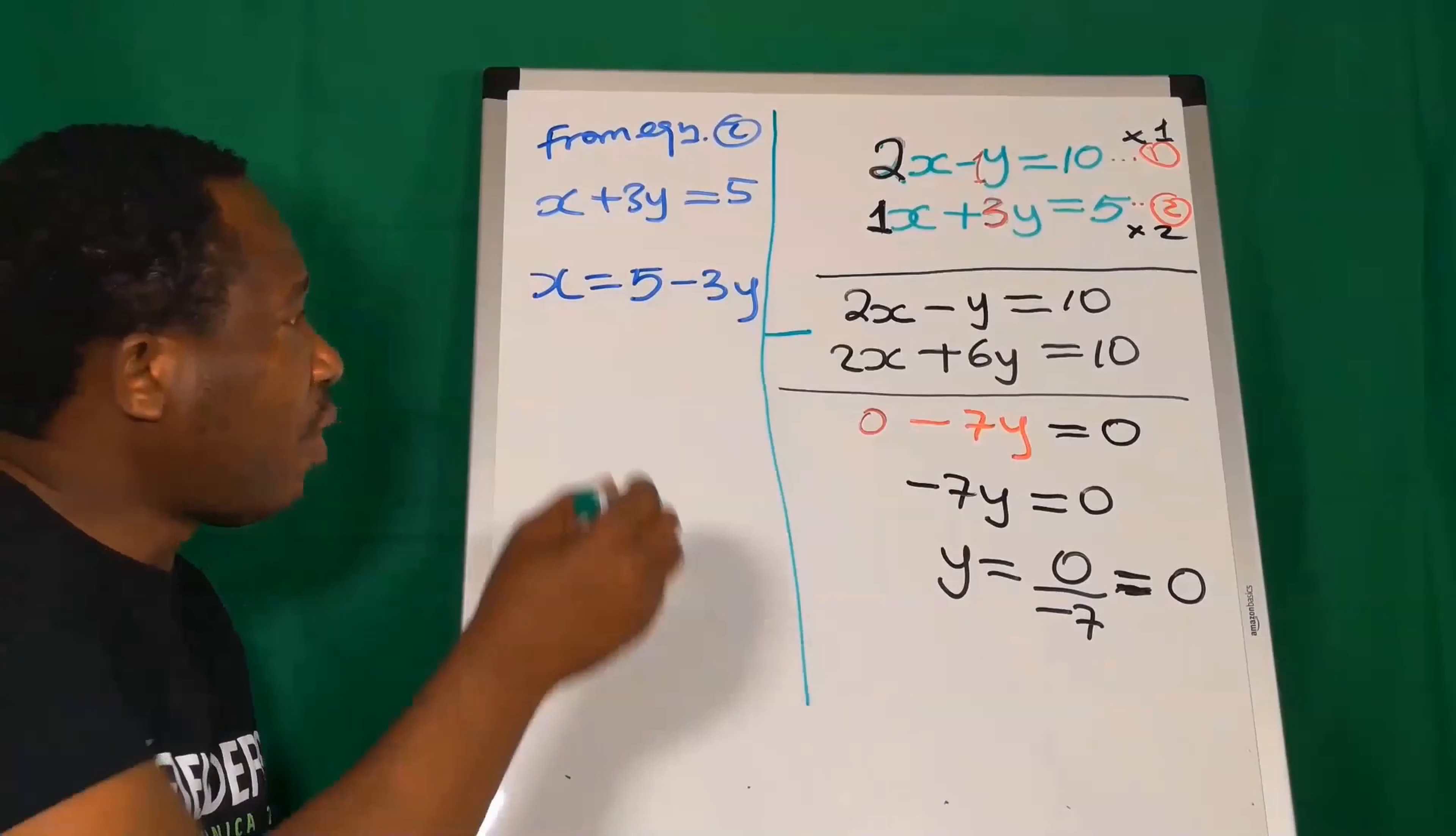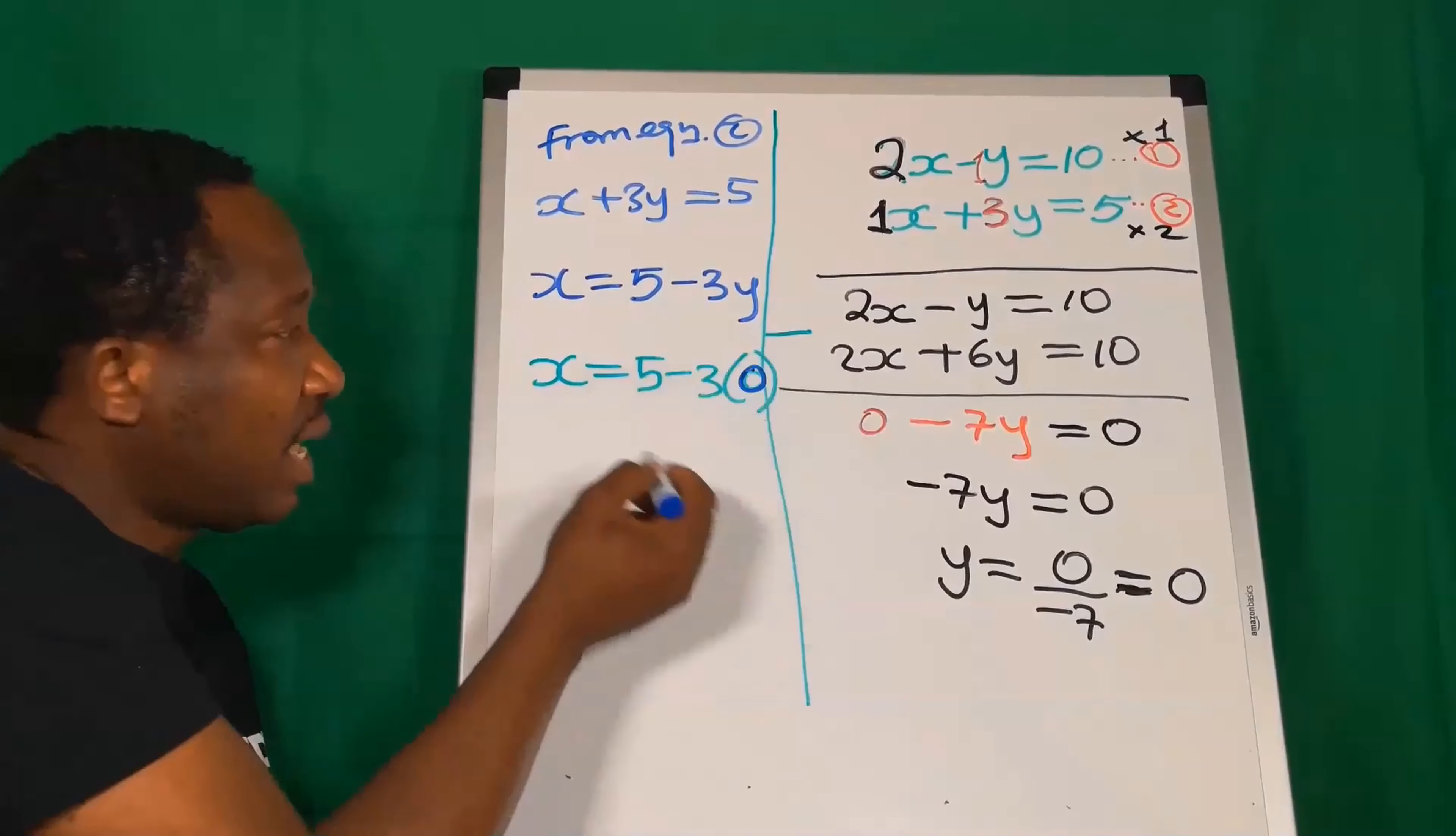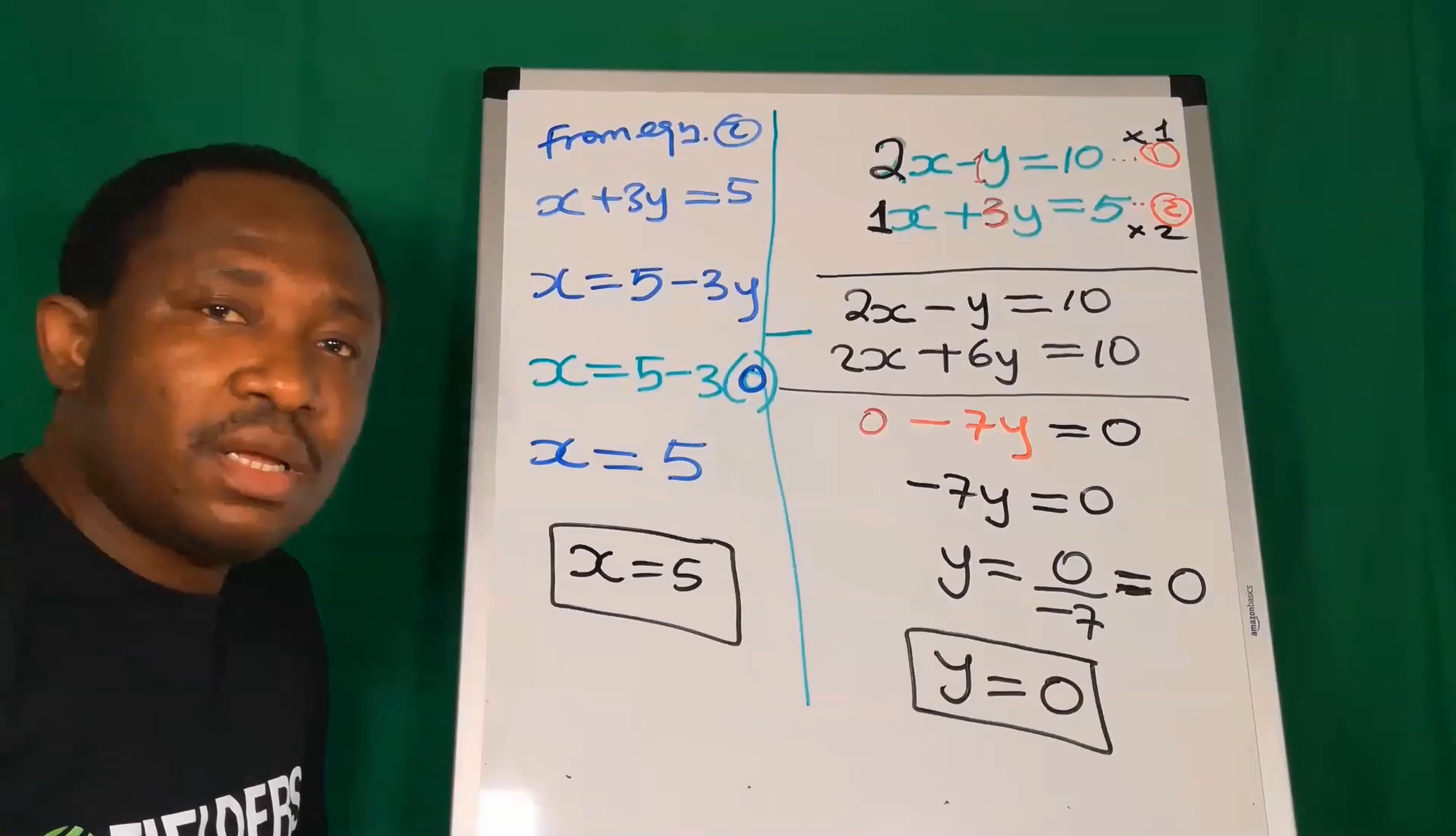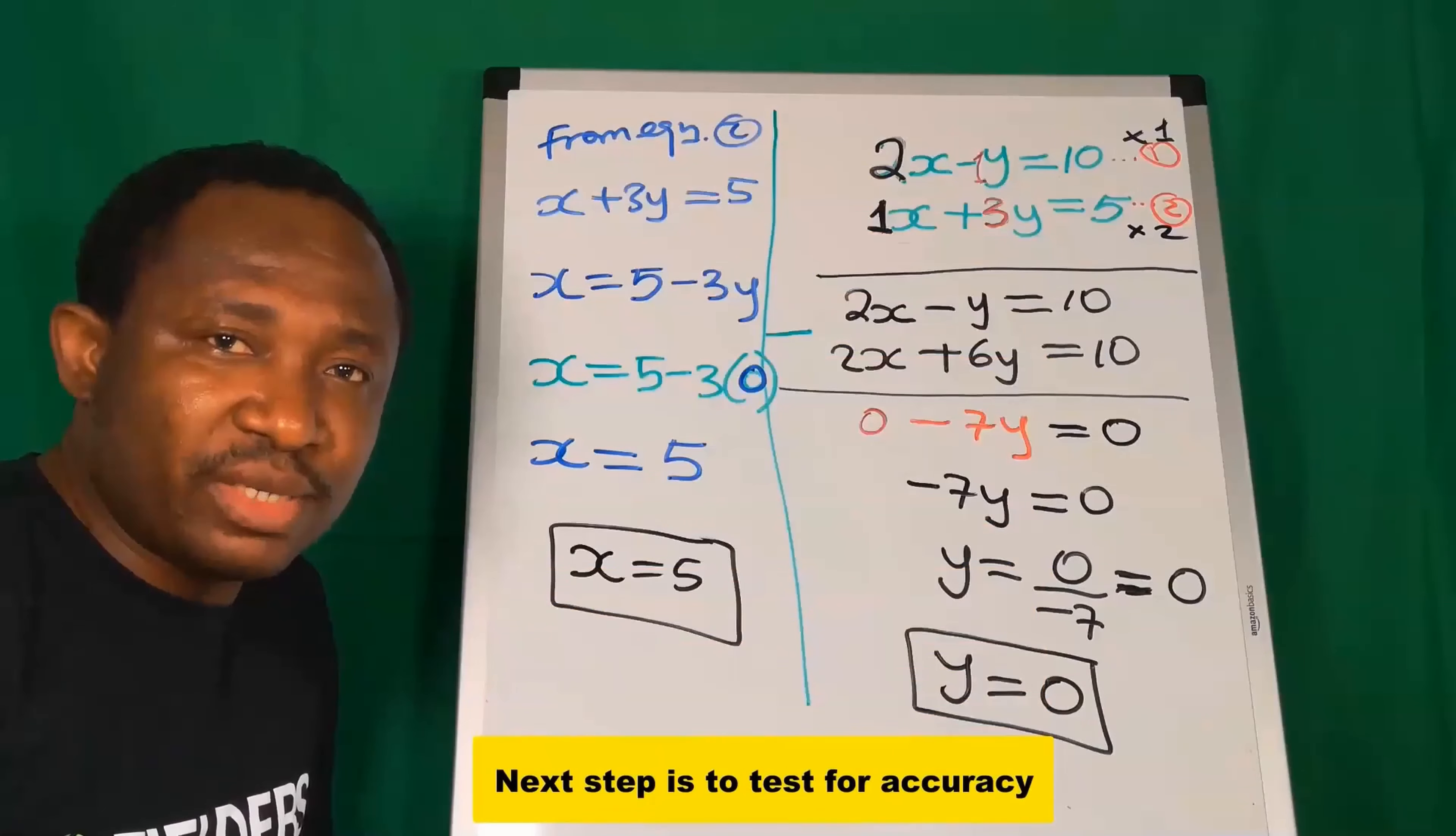With this now, we have 1 times 2 will give me 2x. This 1 multiplied by 1 will give you 1y, and this 1 will multiply this will give you 10. Next, 2 times 1 will still return 2x. 2 times 3 here will give you 6y, and 2 times 5 will give you 10.